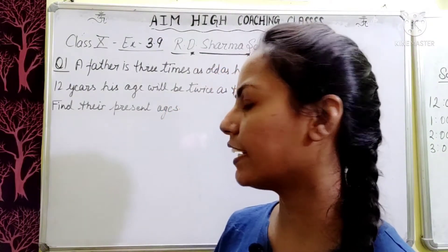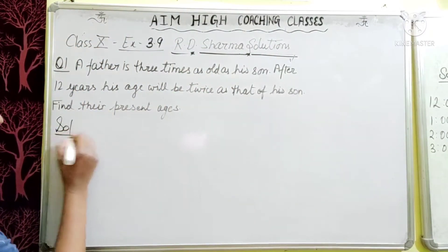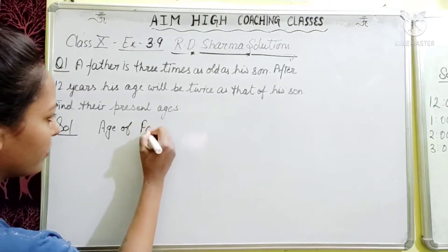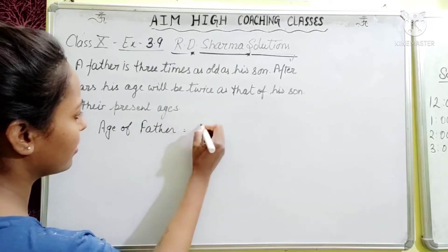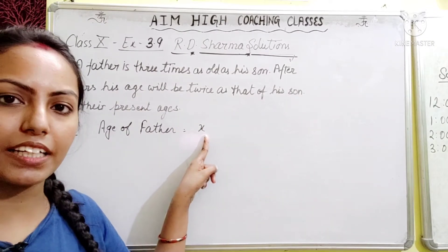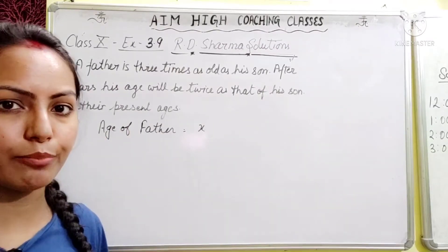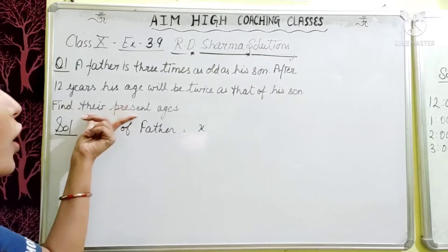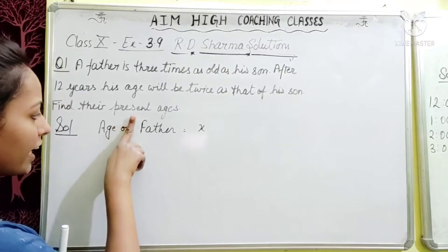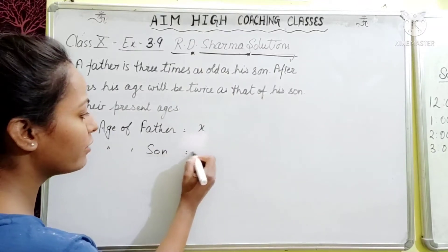Here we have father and son. The two variables are father's age and son's age. Let x be the present age of father and y be the present age of son. When we mention x, it is understood that we are taking the present age - that is what we need to find.